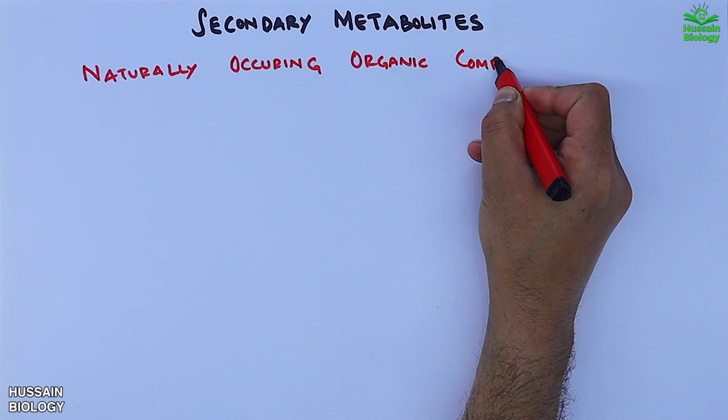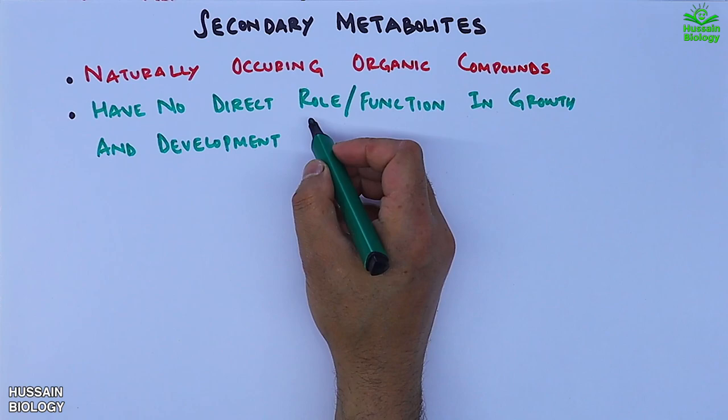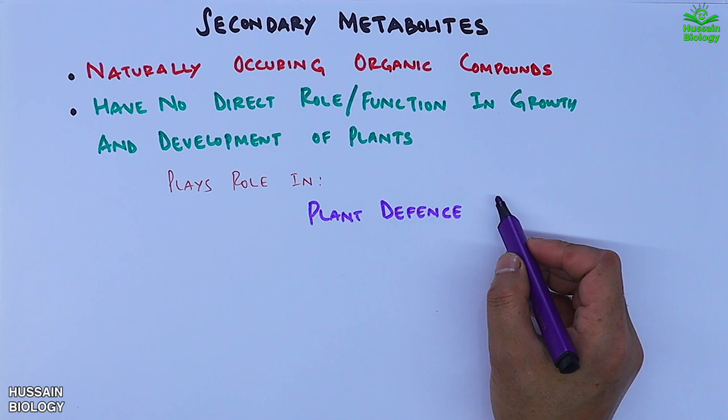The secondary metabolites are naturally occurring organic compounds found in plants. They have no direct role or function in growth and development of plants. These secondary metabolites play a role in plant defense system, wound healing, ecological interactions and phenotypic expressions.